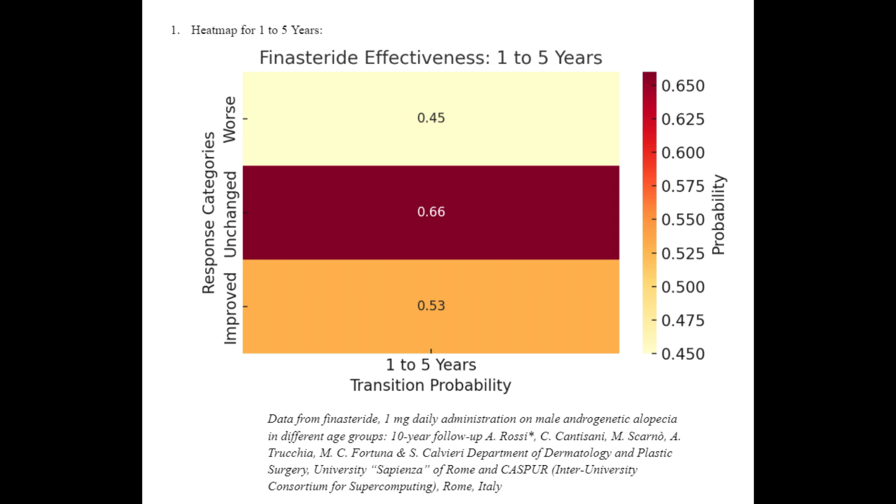Now, the heat map for 1 to 10 years. Similarly, this heat map indicates the probability of changes in a patient's condition, hair condition that is, over a longer period of time, from year 1 to year 10.